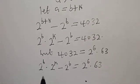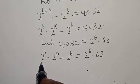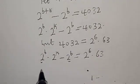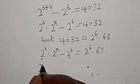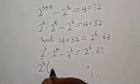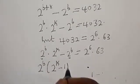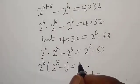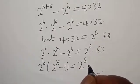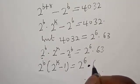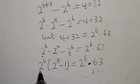Now from here, 2 raised to power b is common on the left-hand side. Let's factor it out. We have 2 raised to power b into 2 raised to power k minus 1, equal to 2 raised to power 3 multiplied by 5.